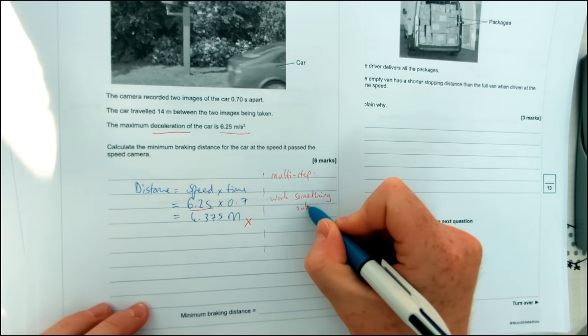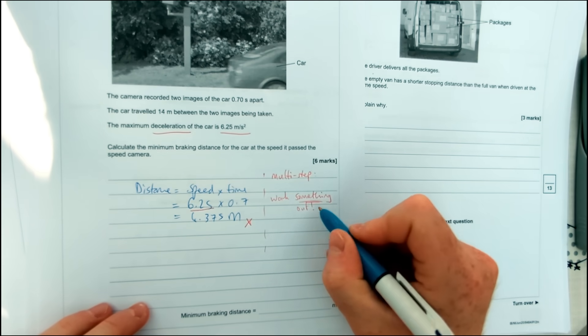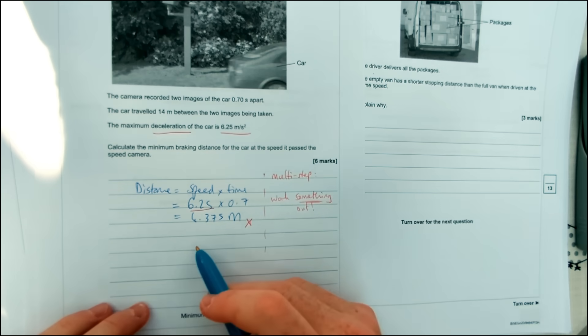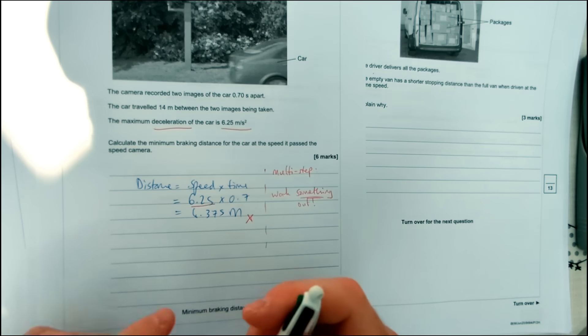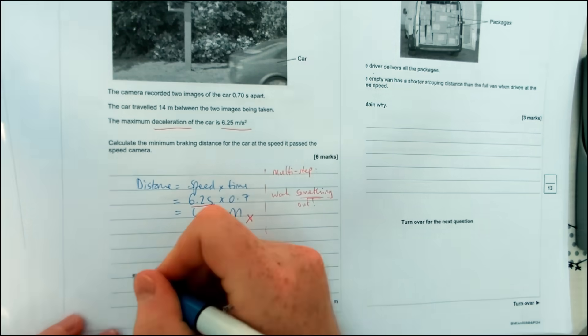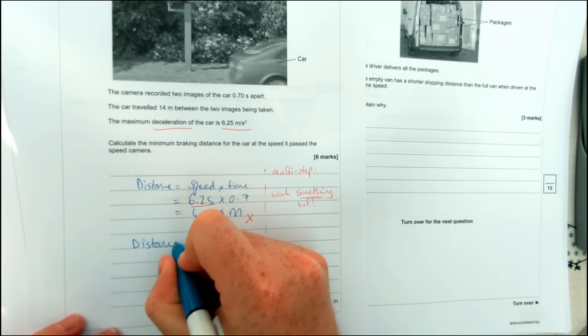So when you have multi-step questions, meaning you have five or six marks, it's two equations at least to be able to use, just work something out. You don't need to work out the final answer because usually that's going to be quite a tricky thing that involves two different equations. So if you work something out correctly, then you can usually use that to find the final answer plus you get two or three marks for this question.